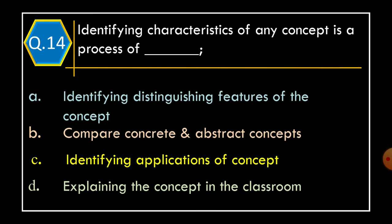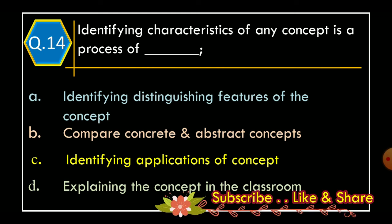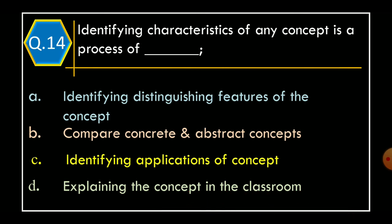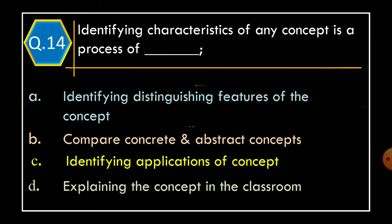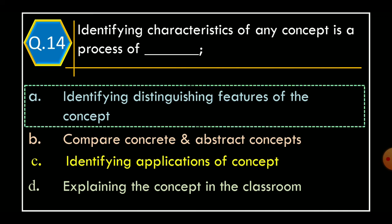Question 14: Identifying characteristics of any concept is the process of — Option A: Identifying distinguishing features of the concept; Option B: Compare Concrete and Abstract Concepts; Option C: Identifying Applications of Concepts; Option D: Explaining the Concepts in the Classroom. The correct option is Option A: Identifying Distinguishing Features of the Concepts.